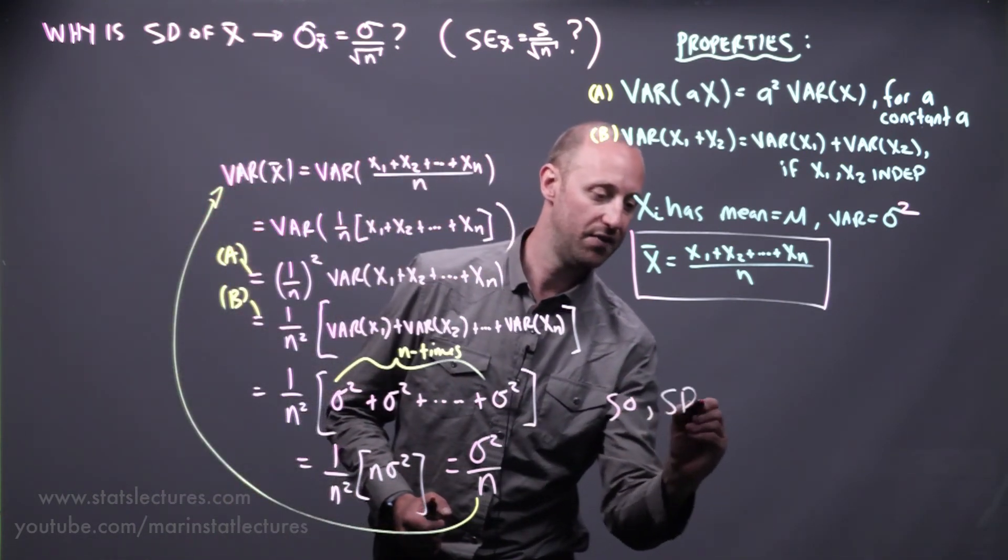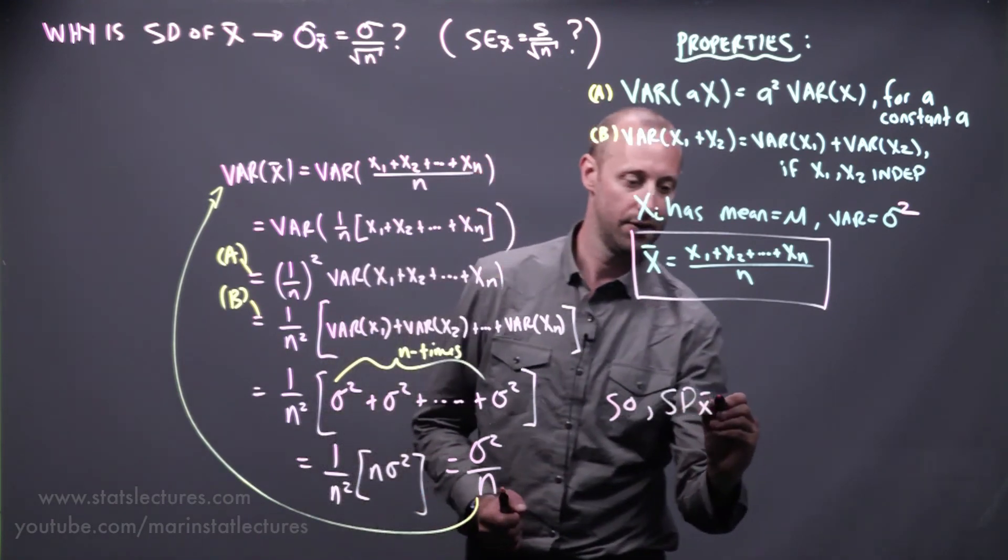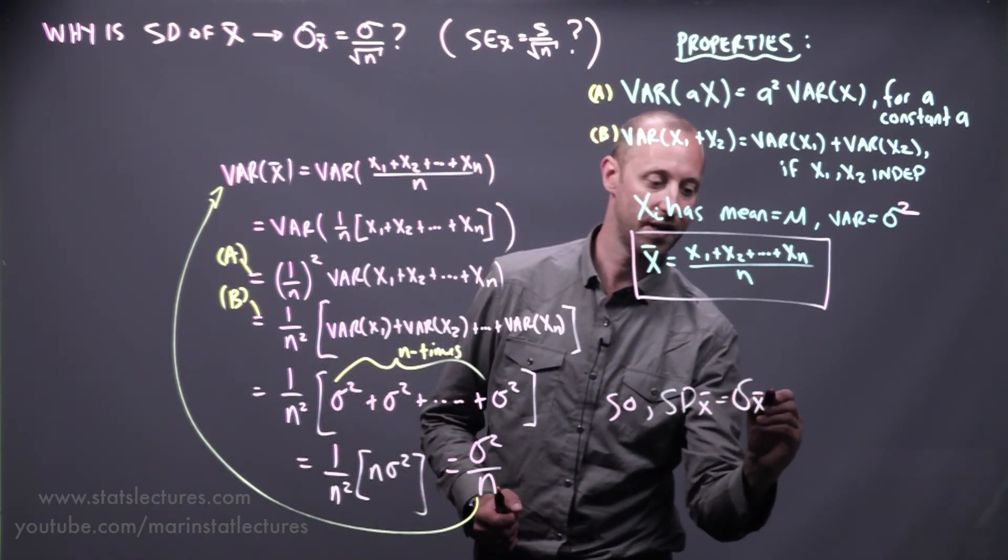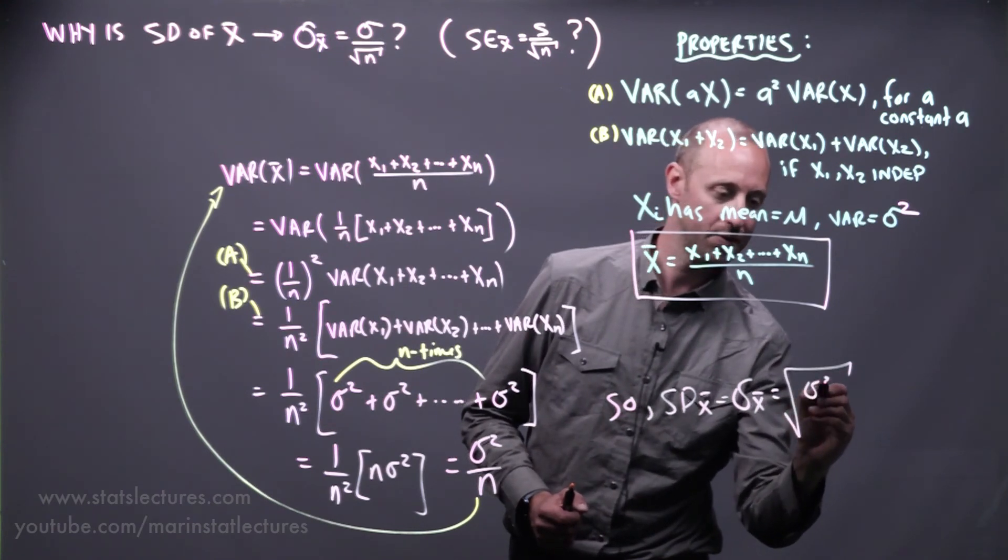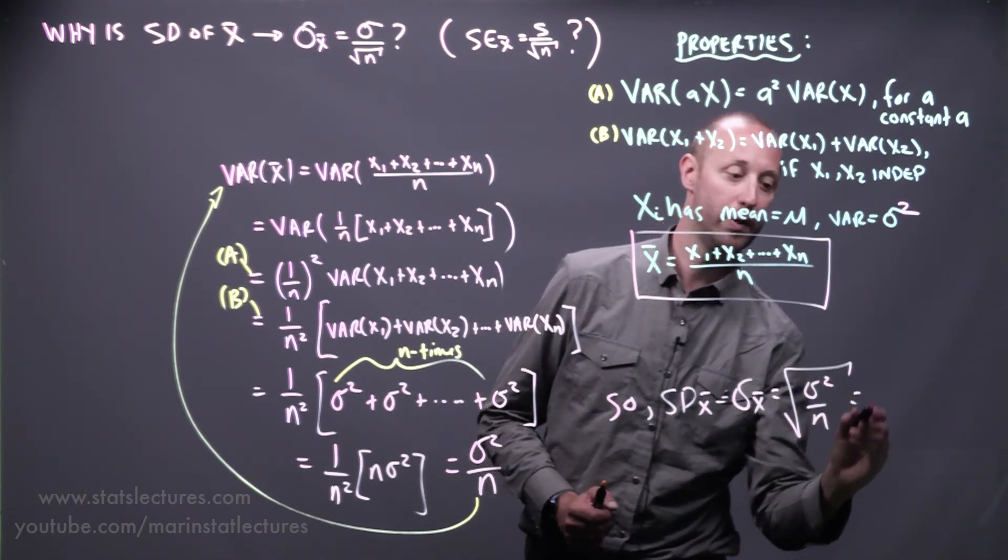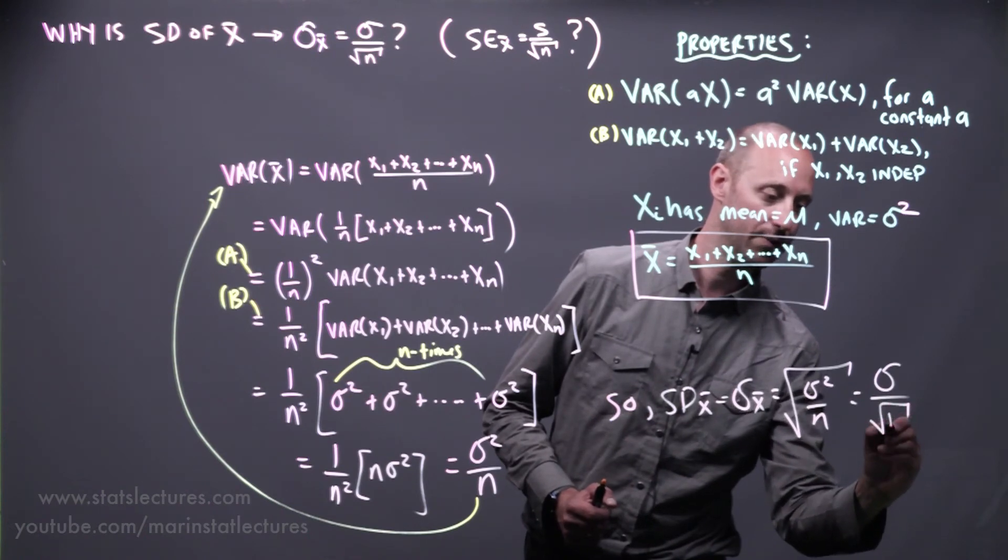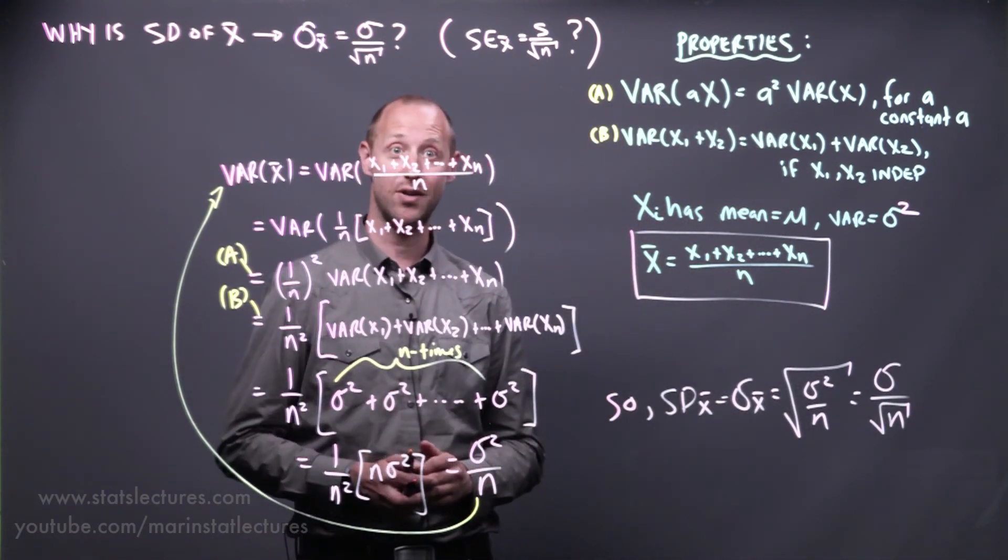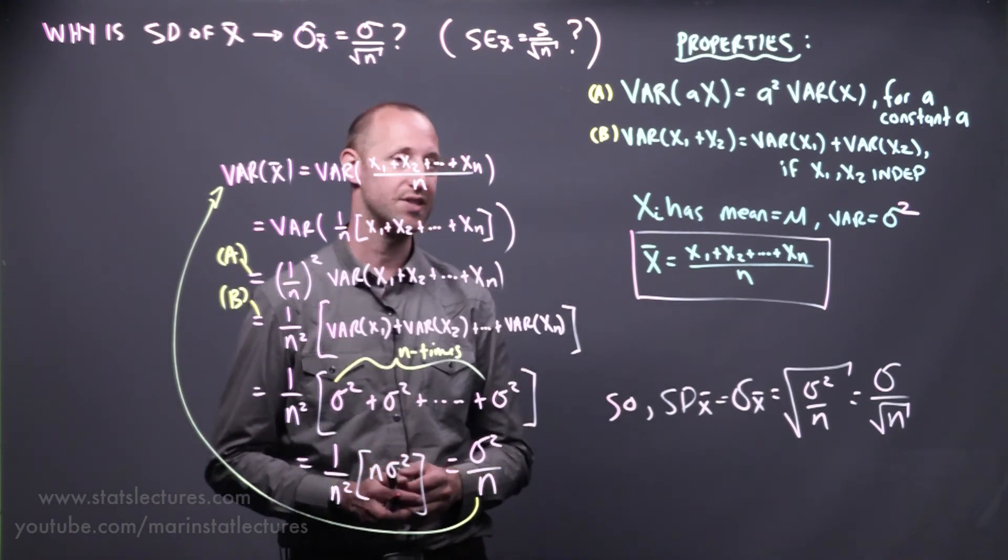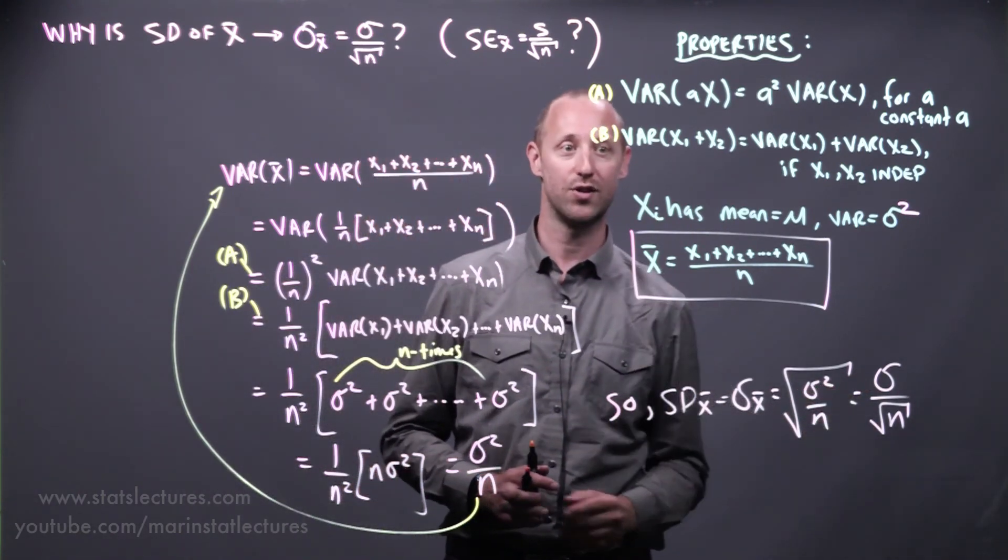So the standard deviation of the sample mean, or sometimes what we write sigma x bar, is the square root of sigma squared over n, which we can write as sigma over the square root of n. So this is how we get to that formula that the standard deviation, or the standard error for the sample mean, is sigma over square root of n.